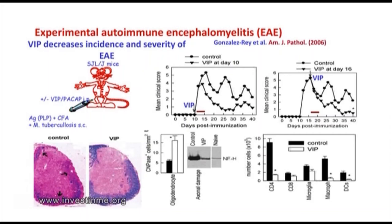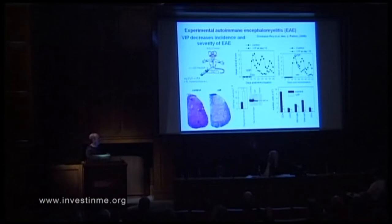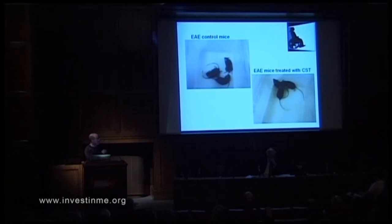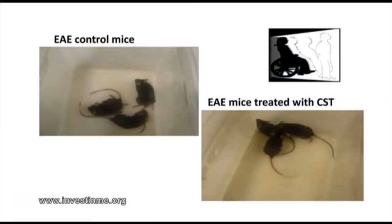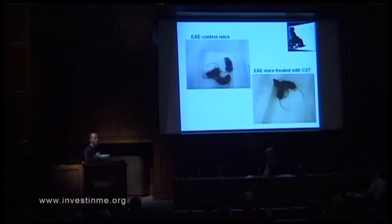Injection of VIP at the beginning or at the peak of disease for five days prevents relapse. This is because we prevent demyelination, improve the number of oligodendrocytes, and avoid axonal damage — mainly by inhibiting inflammatory cell infiltration into the brain. We also have a video demonstrating that mice treated with cortistatin at the point of paralysis can subsequently move perfectly.